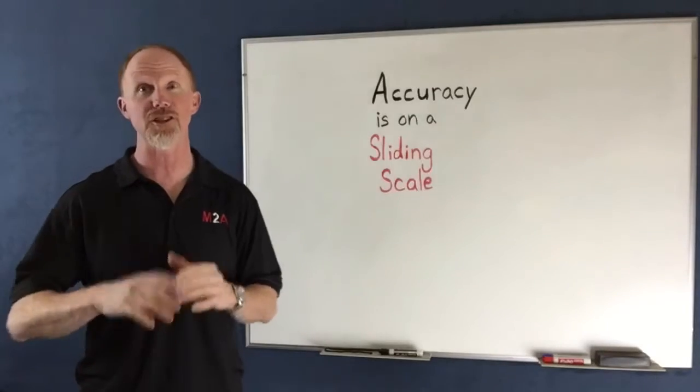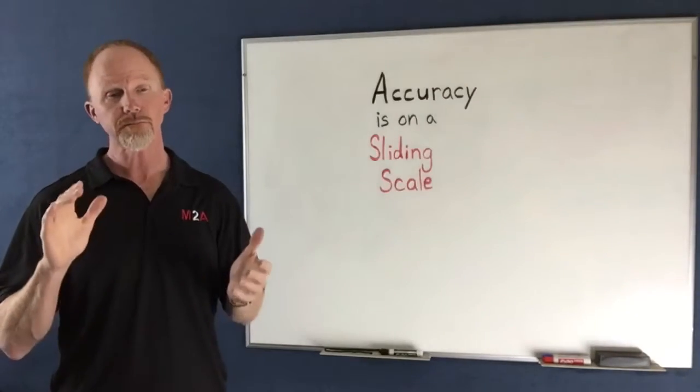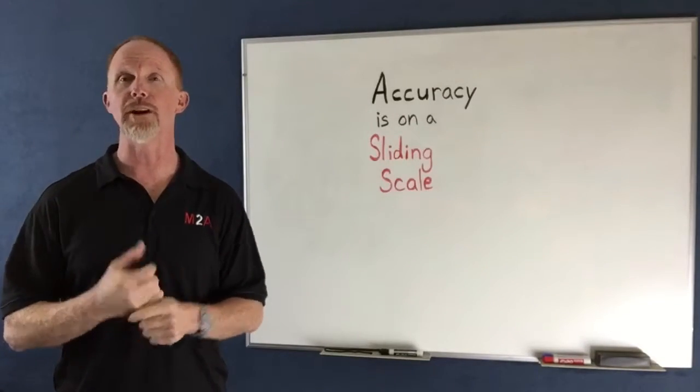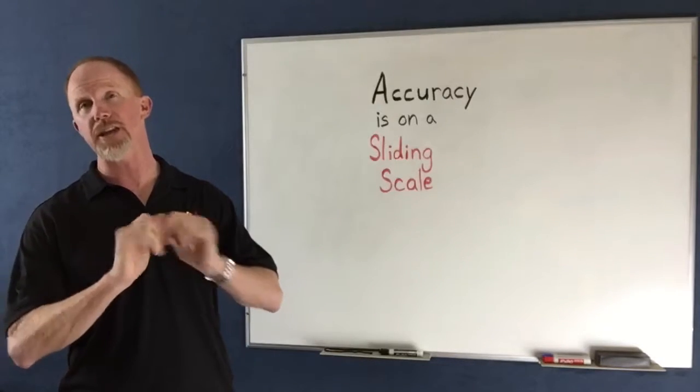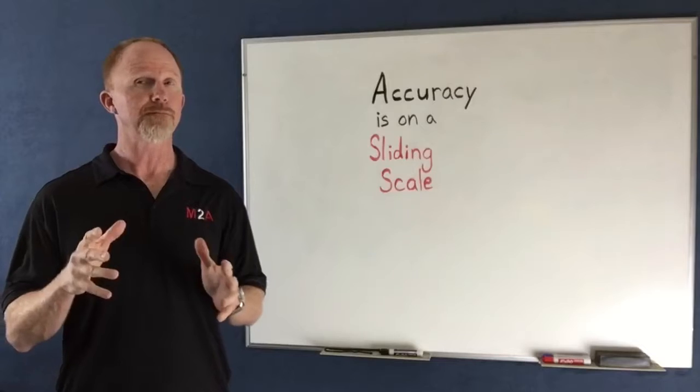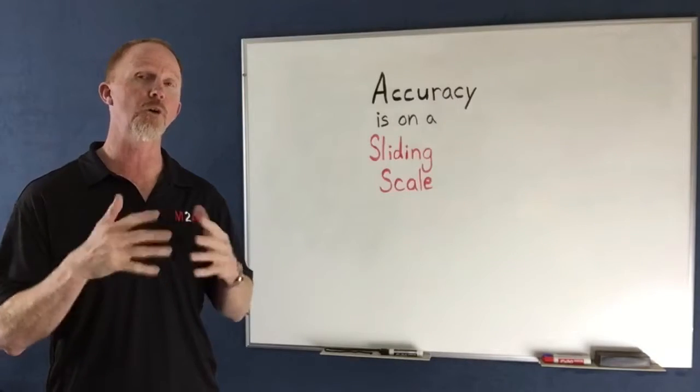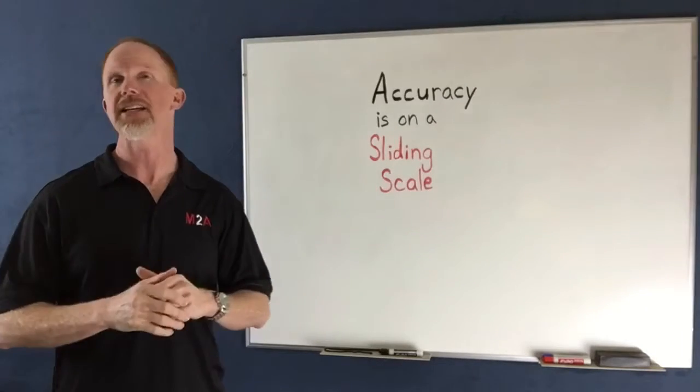A sliding scale, what does that mean? It means it changes. So let's say that we're setting a volleyball. We're setting a volleyball to the outside here. Now, you might think that only a perfect set is accurate.